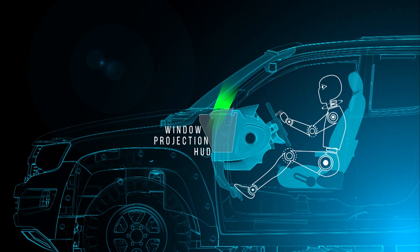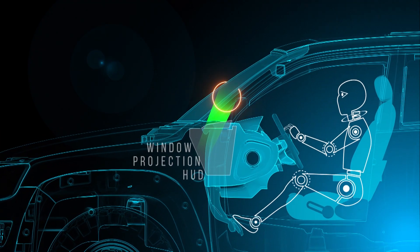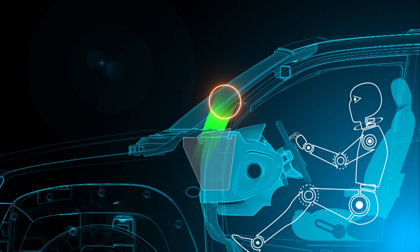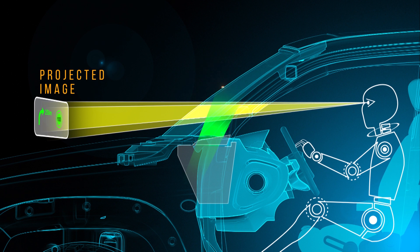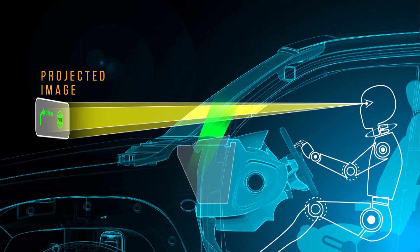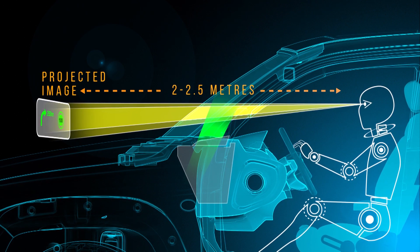As the name implies, window projection type HUDs project their image directly onto the windscreen glass. From the driver's perspective, the image will appear to float in front of them at a deceptive distance of 2 to 2.5 metres.